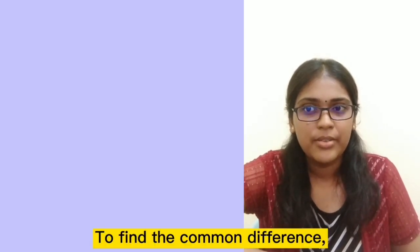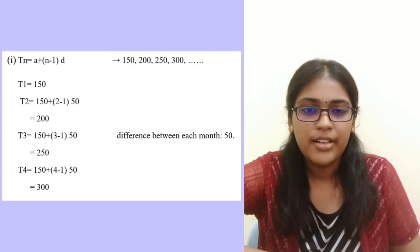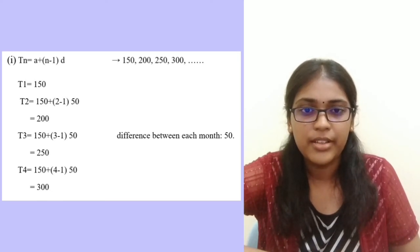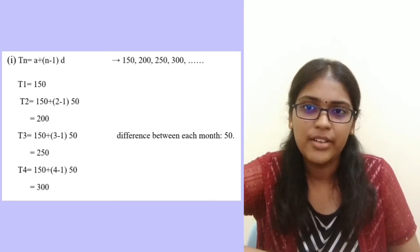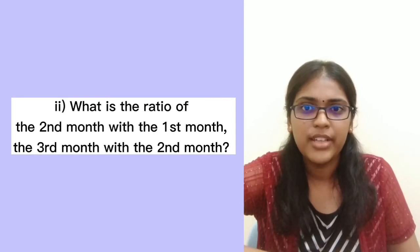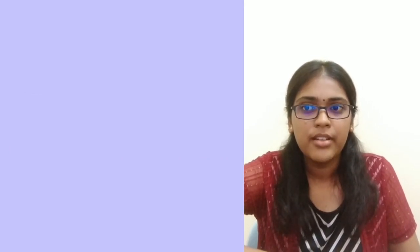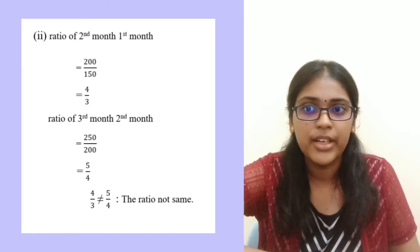Next, based on Part A, what is the difference between each month? To find the common difference, we find the difference between each month: first month is 150, second month is 200, third month is 250, and fourth month is 300. So the sequence is 150, 200, 250, 300, and the common difference between each month is 50. For the ratio of the second month to the first month and the third month to the second month: the ratio of second to first is 4/3, and the ratio of third to second is 5/4. That means the ratio is not the same.